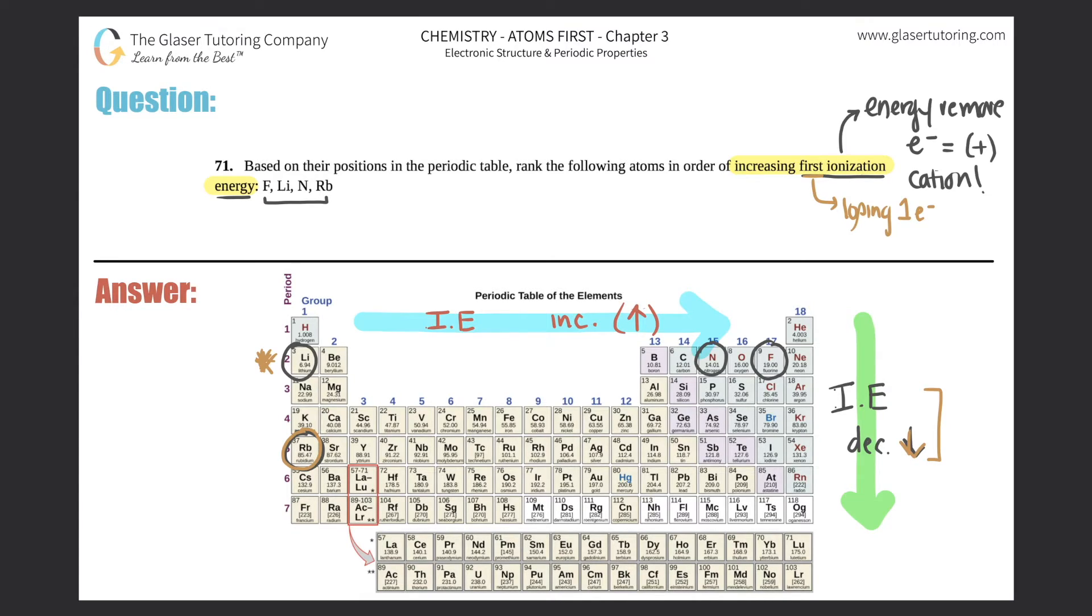So rubidium would have to have the smallest ionization energy. There's not a lot of energy that's required to lose the first electron, and that makes sense because rubidium is a huge element. The electrons are way farther away from the nucleus, hence they have not a strong attraction. So the electrons are like, I'm gonna bounce, bye-bye. So rubidium would have the lowest ionization energy.